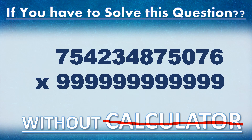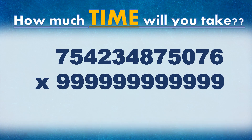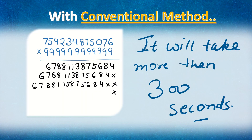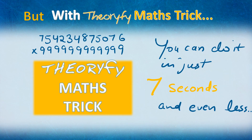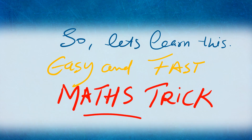Hello everyone. What if you have to solve this question on your screen without a calculator? How much time do you think you're going to take? With the conventional method — the method we learned in school — it may take more than 300 seconds or maybe more. But with this math trick, you can do it in just 7 seconds or even less. So let's learn this easy and fast math trick.